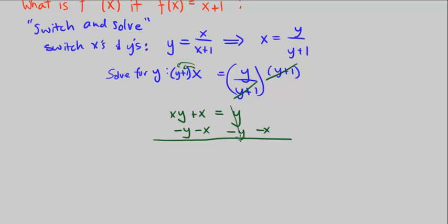If you subtract y here, it cancels out and you get negative x. The x and negative x cancel on this side. So you're left with x times y minus y.